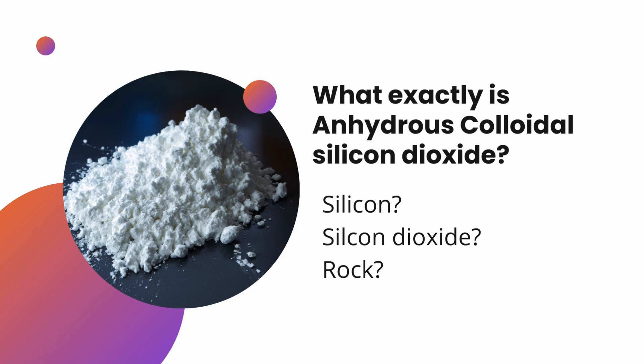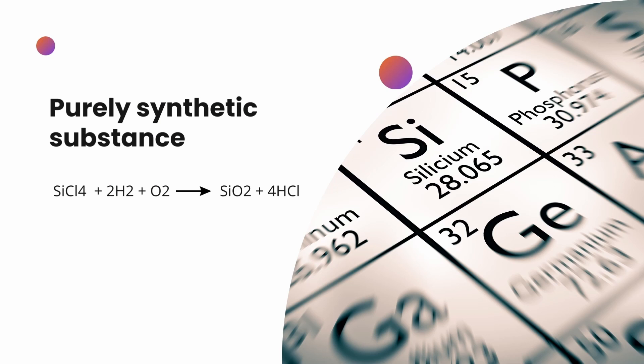Nancy, why don't you start us off by describing colloidal silicon dioxide? Colloidal silicon dioxide is a synthetic substance made out of two elements, silicon and oxygen. It's a fine amorphous white powder whose primary particles are in the nanoscale range. It is obtained through chemical synthesis using a suitable silicon compound at temperatures in excess of 2,000 degrees Celsius.